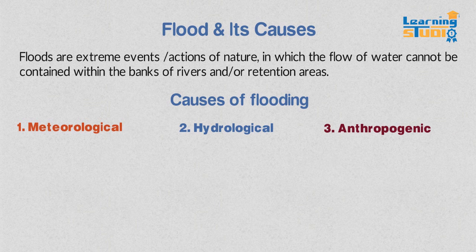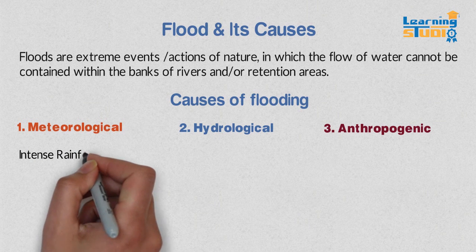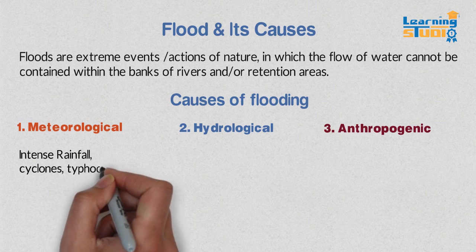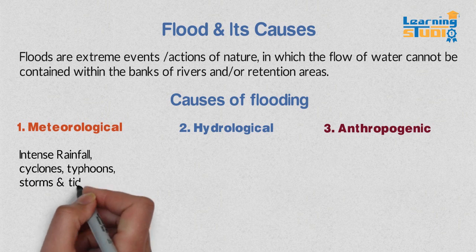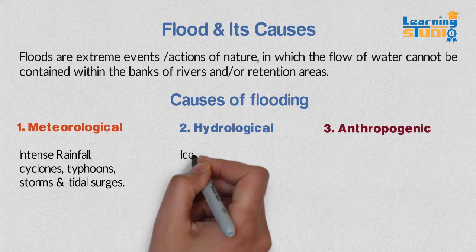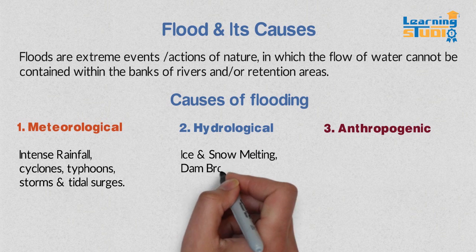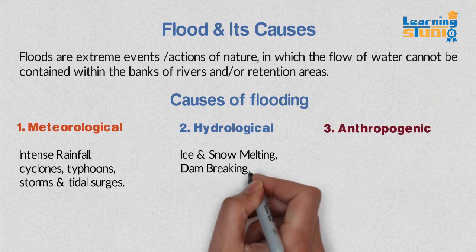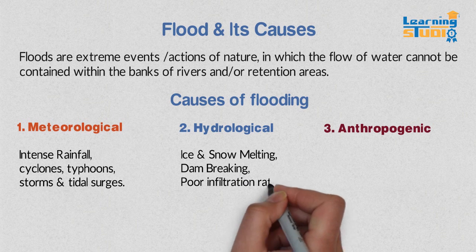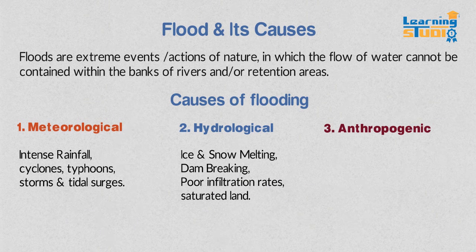Meteorological causes are intense rainfall, cyclones, typhoons, storms, and tidal surges. Hydrological causes are ice and snow melting, dams breaking, poor infiltration rates, and saturated land.